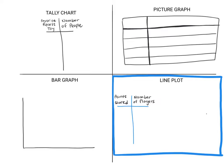You may have noticed that the line plot is by itself, outlined in blue. That's because a line plot is a little bit different from a tally chart, picture graph, and bar graph — it has to involve data that shows data in numbers, because the line plot is going to show a number line, as we'll see in a little bit. So we'll come back to that.